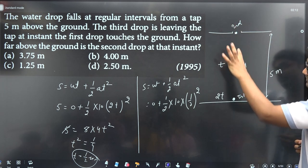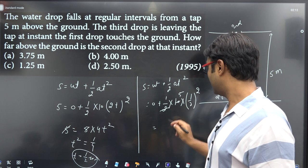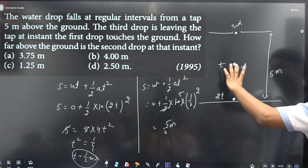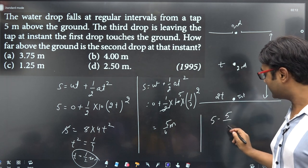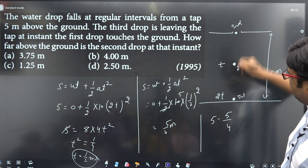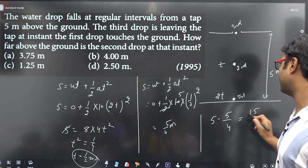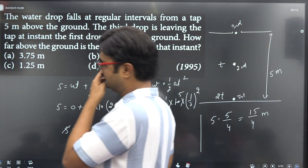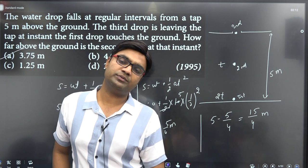The distance traveled by the second drop is 5/4 meters. The height above ground is 5 - 5/4 = 15/4 meters, which equals 3.75 meters. That's the answer from the options given.